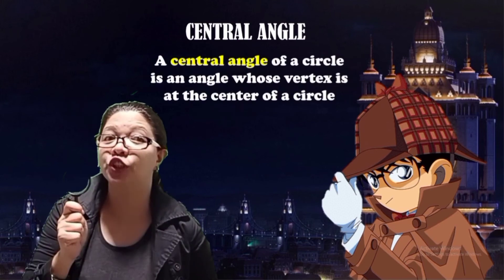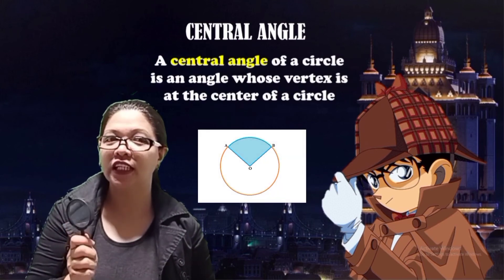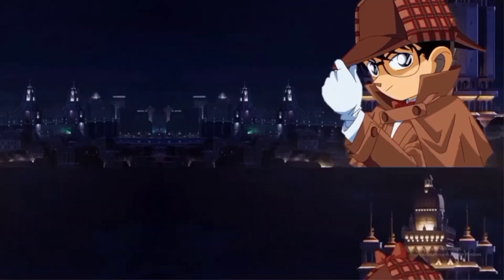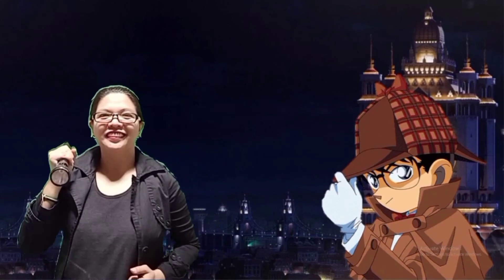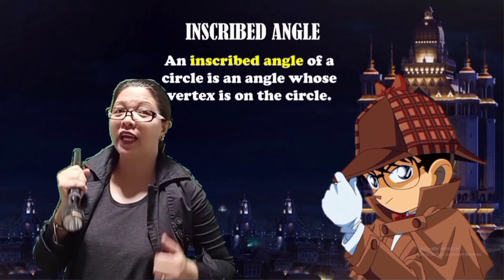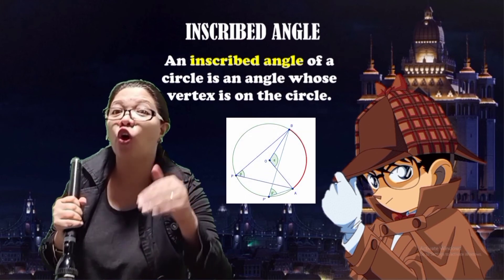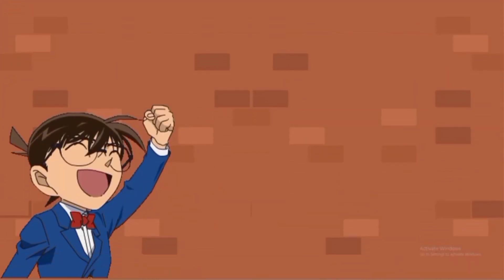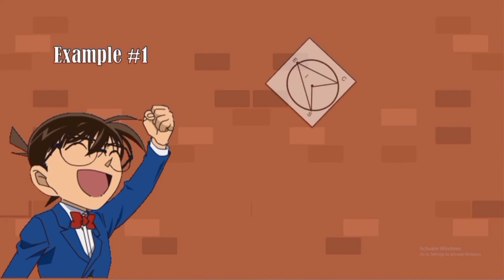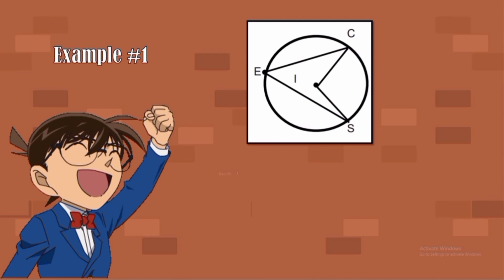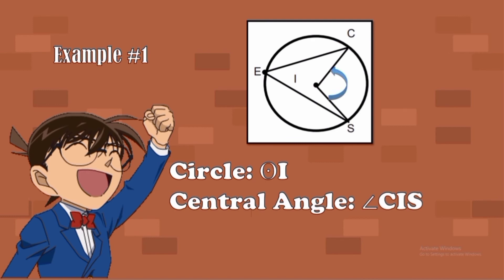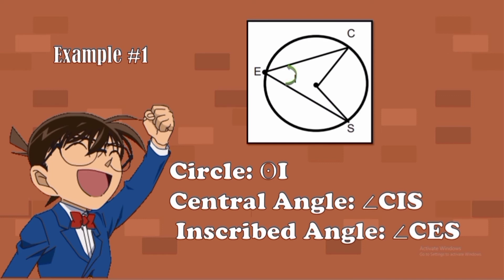A central angle of a circle is an angle whose vertex is on the center of the circle. An inscribed angle of a circle is an angle whose vertex is on the circle. Example number one. Look at the illustration. The name of the circle is Circle I. Our central angle is angle C-I-S, because its vertex is the center of the circle. Our inscribed angle is angle C-E-S. Its vertex lies on the side of the circle.